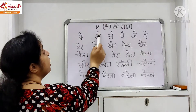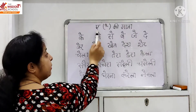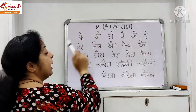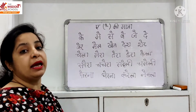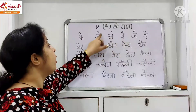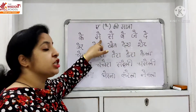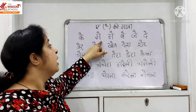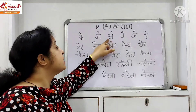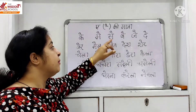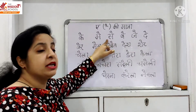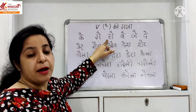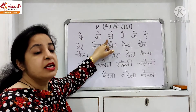Yeh hai Ma. Ma — A ki matra hai na upar. Ma aur A milkar kya ban jayega bita? Ma. Next is Sa. Sa aur A ki matra mil jayegi, toh kya ban jayega? Sa. Kya ban jayega? Sa.